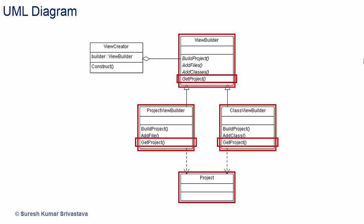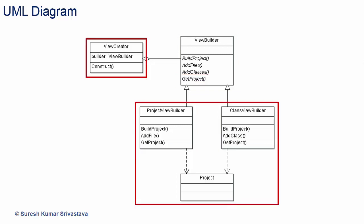So here a complex composite object is built step by step and the product is returned in the final step. The good thing is that it isolates the code for construction and representation. We can see that the logic for construction of object is separated from the representation of object, and the same construction process is used for different representations.